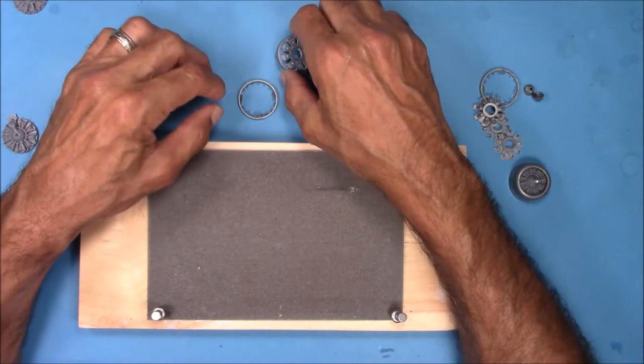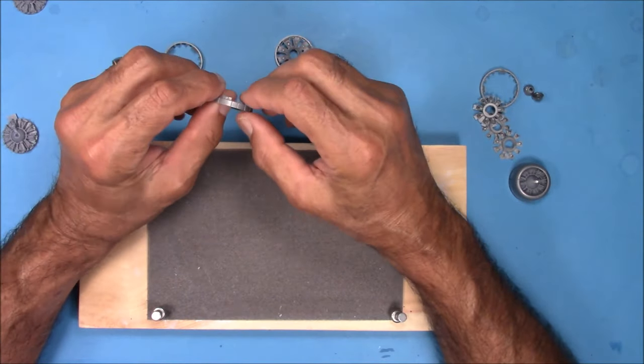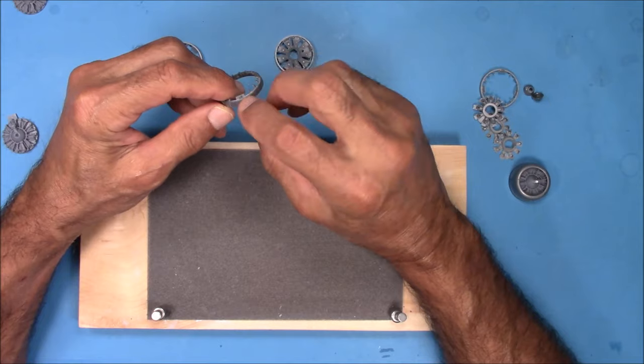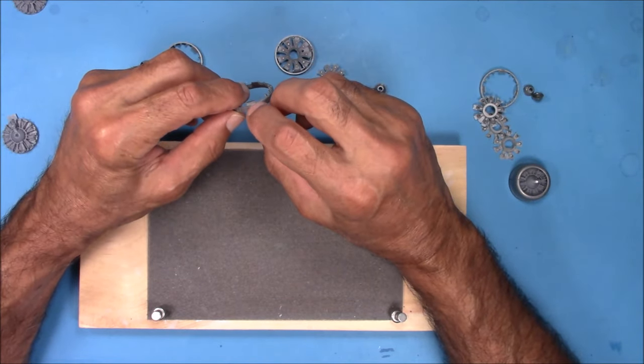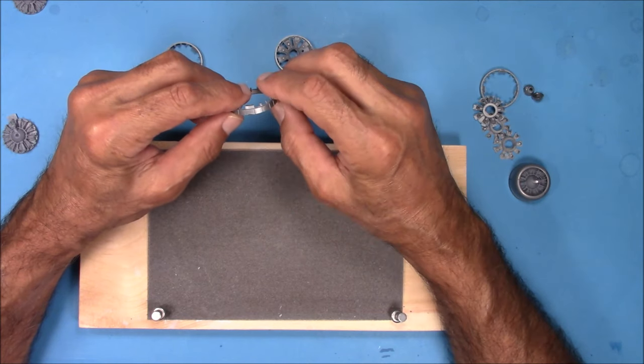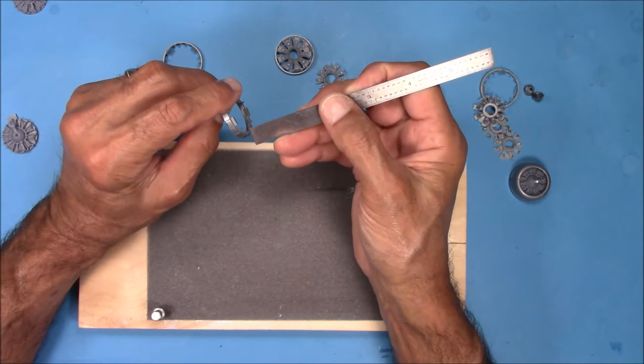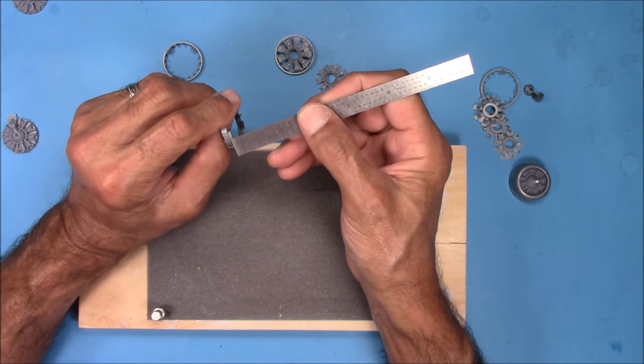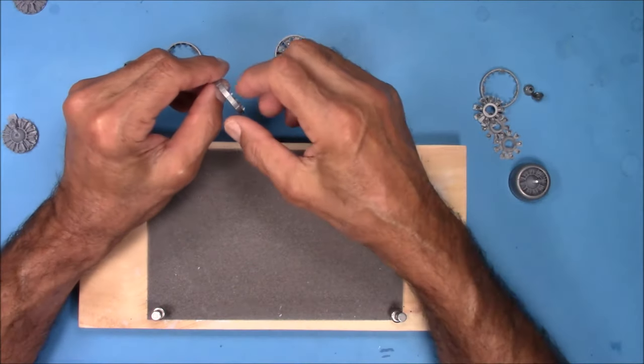Now, what you need to do for the engine to fit correctly is you have to sand this down so that these thicker tabs are at approximately 2/32nds of an inch. Sorry about that. It's 2/32nds of an inch.